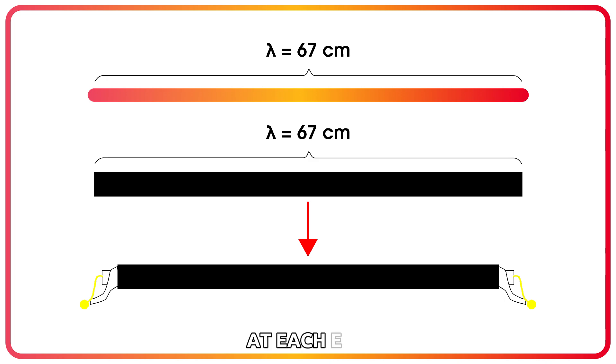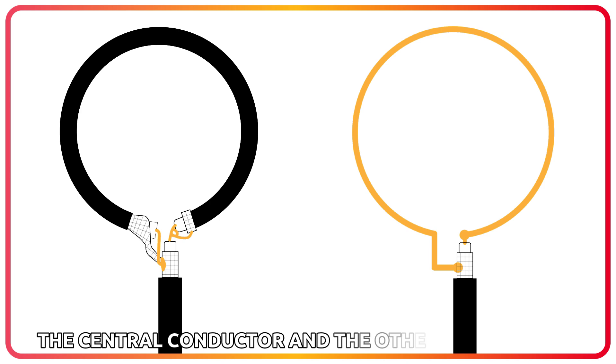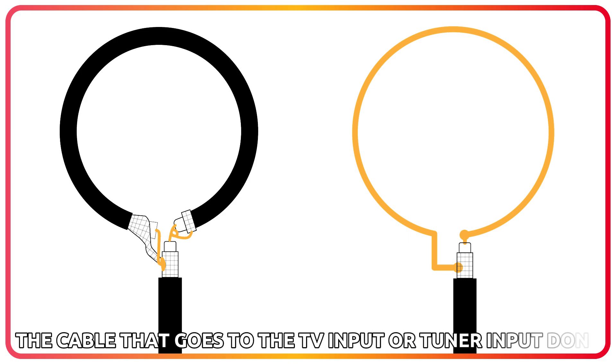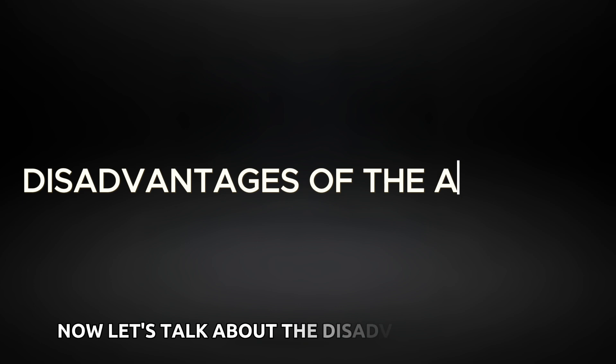Bend this segment into a loop. Your loop antenna is ready. One end of the loop is soldered to the central conductor and the other to the shield. The feeder, that is the cable that goes to the TV input or tuner input. Done, you can use it now. Now let's talk about the disadvantages of this antenna.